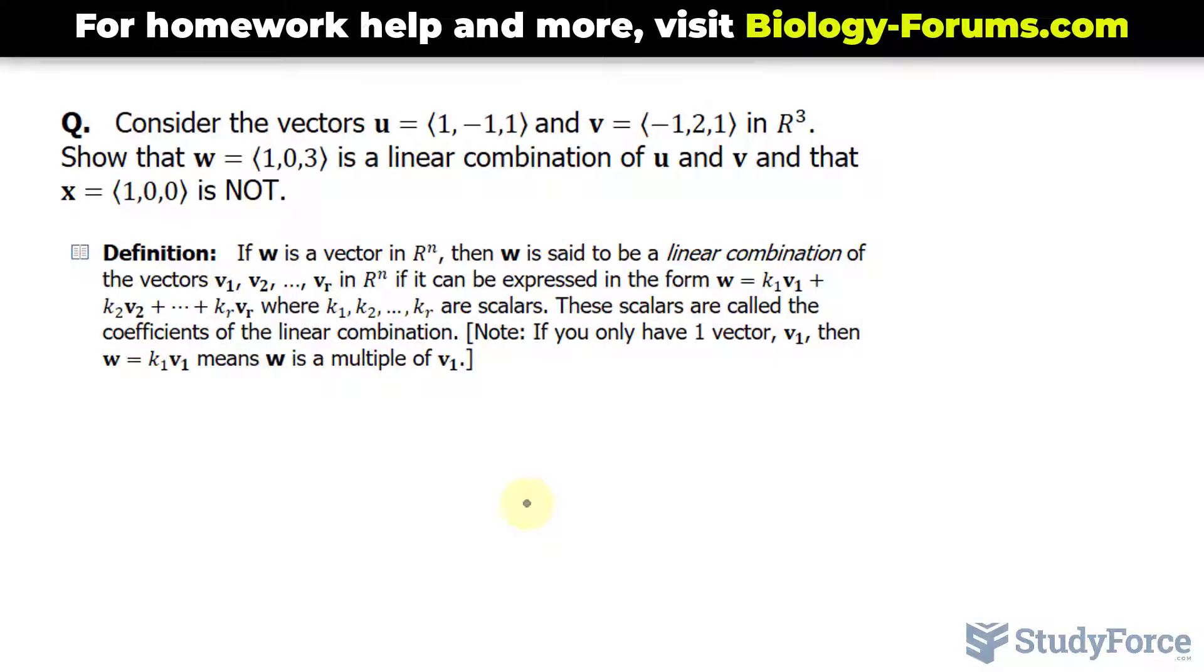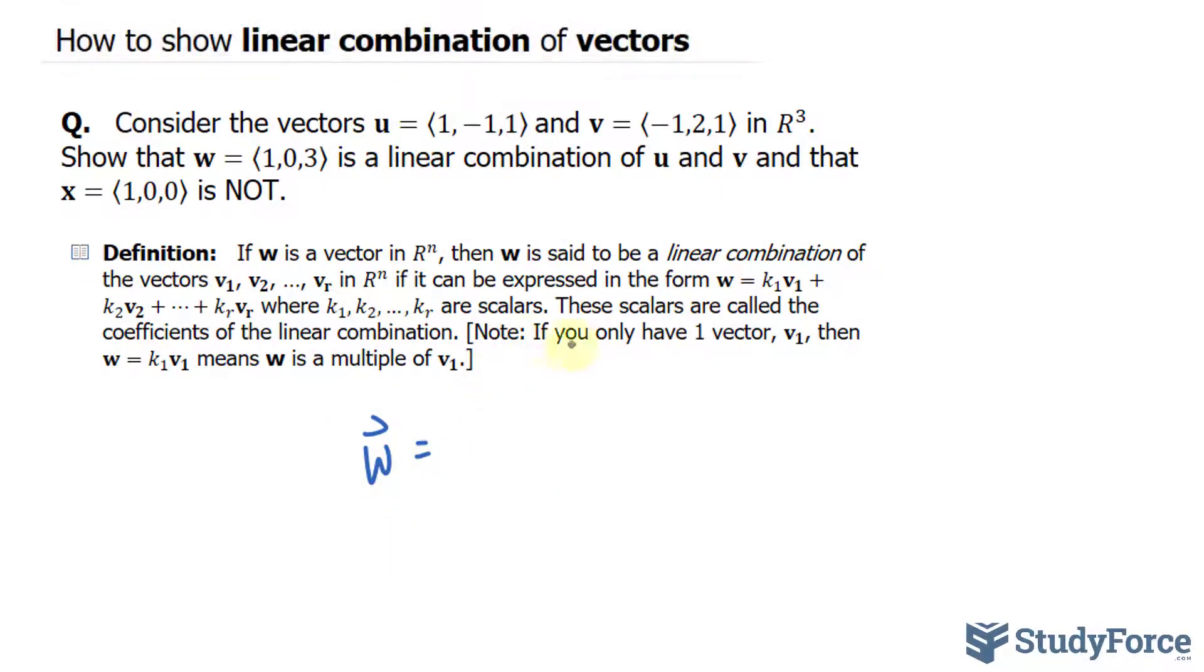To solve this problem effectively, you want to make vector w equal to k₁ times vector u plus k₂ times vector v. We have two scalars because we have two vectors, u and v. k₁ and k₂ is what we're looking for here, and at this point we can replace w, u, and v with their components.